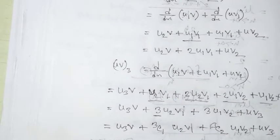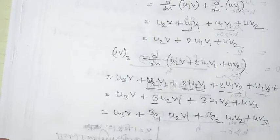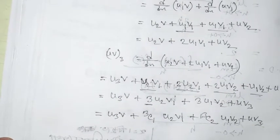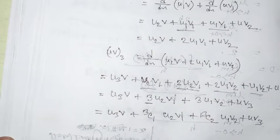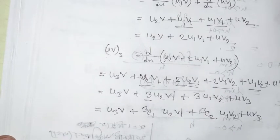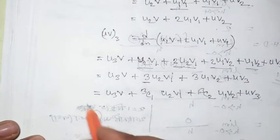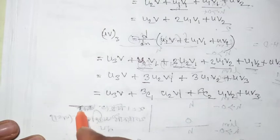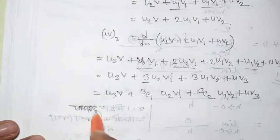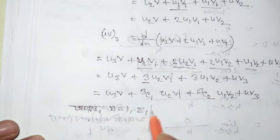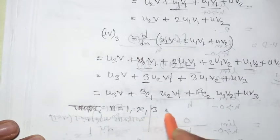Now let us generalize. For n equal to 3C1·U_4, then we write U_1. Let us write down: n is equal to 1, 2, 3 for the pattern we observed.